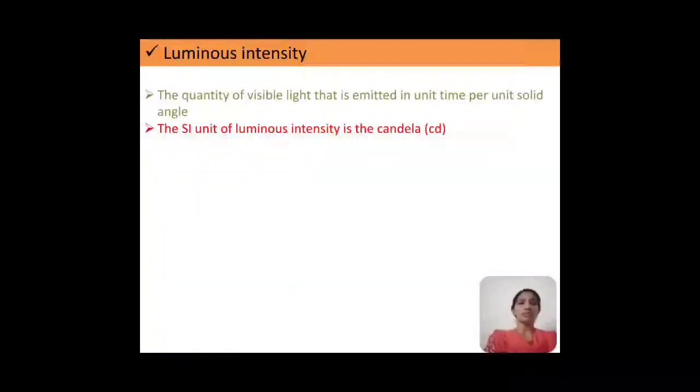Luminous intensity is nothing but the quantity of visible light that is emitted in unit time per unit solid angle. Its SI unit is the candela, and it is denoted by CD.